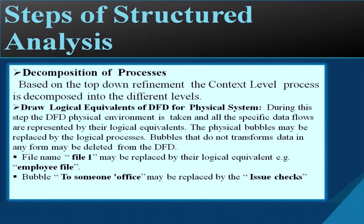The second step is decomposition of processes. Based on top-down refinement, the context level process is decomposed into different levels. Next, the logical equivalent DFD for the physical system is drawn — the DFD of the physical environment is taken and specific data flows are replaced by their logical equivalents. Physical bubbles may be replaced by logical processes, and bubbles that do not transform data may be deleted. For example, a file name like 'file 1' may be replaced by a logical name like 'employee file'.